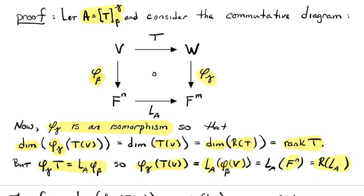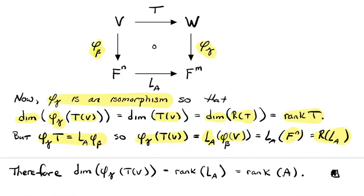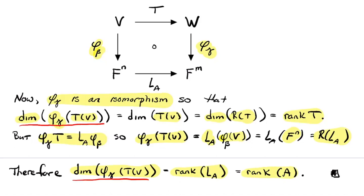Because of the commutative diagram, phi sub gamma of T of V equals L sub A of phi sub beta of V, which is the range of L sub A. So the dimension of phi sub gamma of T of V is the rank of L sub A by definition, and the rank of L sub A is the rank of A. Putting those two things together: I've computed this dimension in two different ways — one way gives the rank of T, the other gives the rank of this matrix. That's exactly what the theorem says.